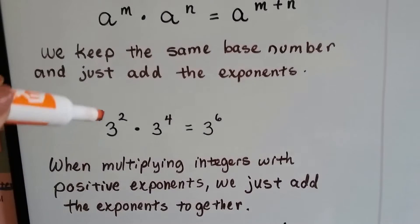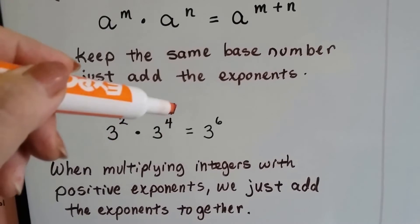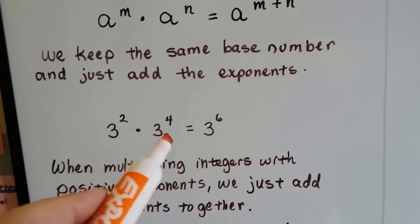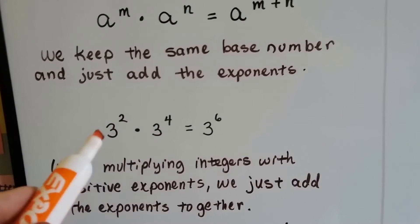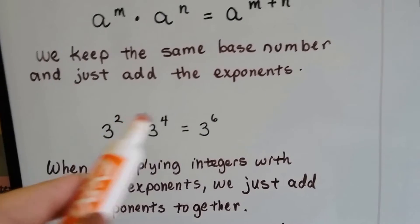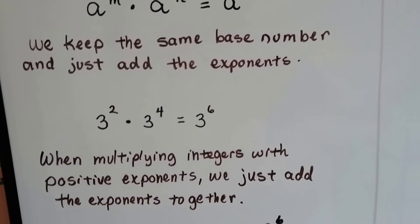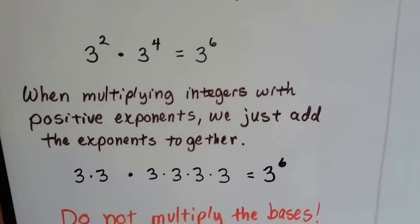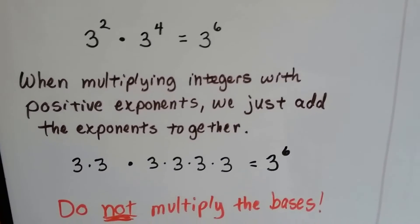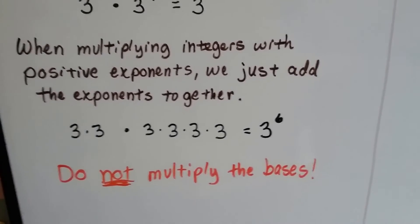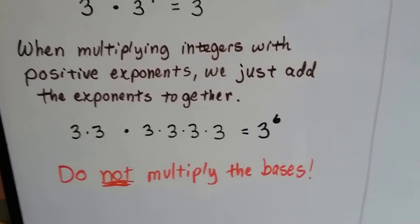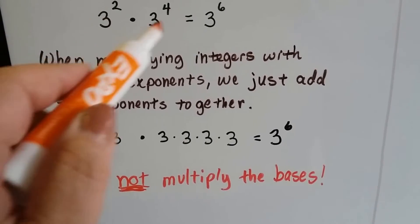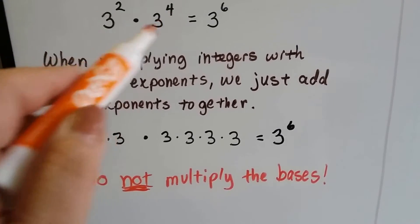So if it was 3 to the second power times 3 to the fourth power, 3 is the same base number. We just add the exponents together. When we're multiplying integers with positive exponents, we just add the exponents. We do not multiply the bases when they're the same — we don't do 3 times 3.